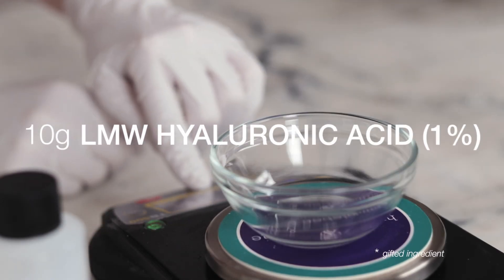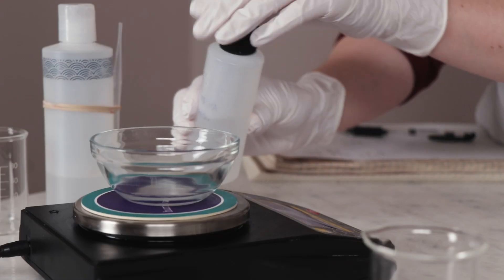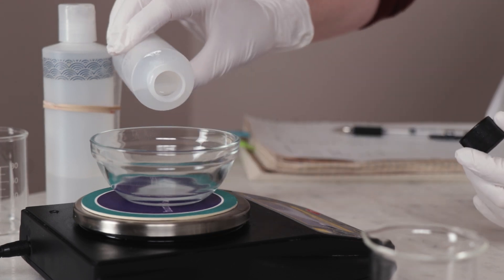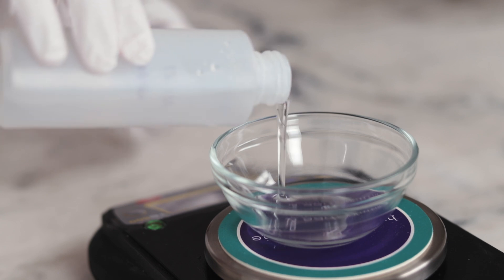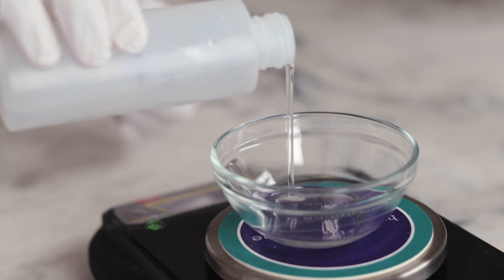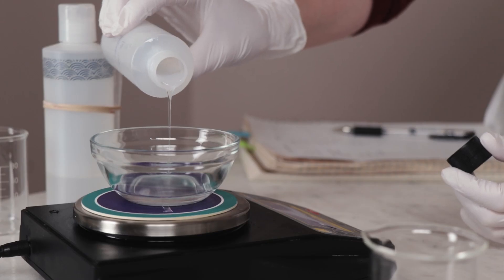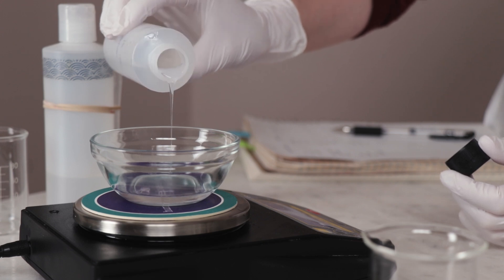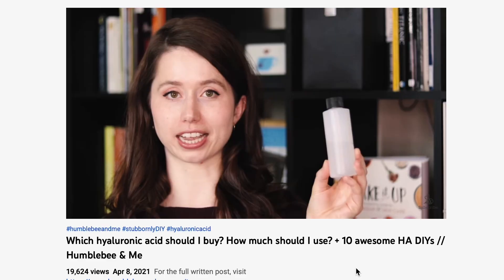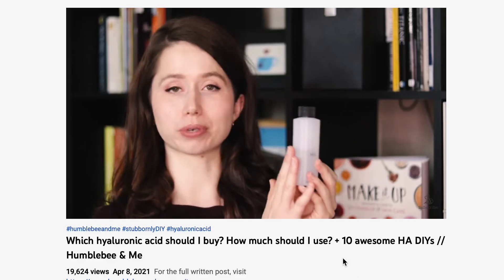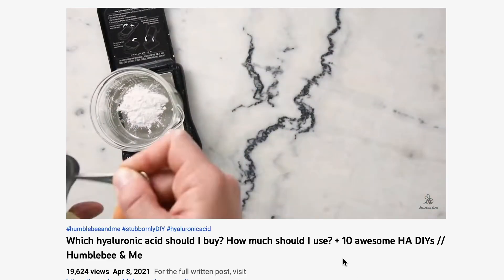20 grams of a 1% low molecular weight hyaluronic acid solution adds some really silky, luxurious, non-tacky, moisturizing goodness to the formulation. I've got an entire blog post and video on how to make this 1% solution from hyaluronic acid powder, and both are linked in the partner blog post. I've also done a Q&A post and video on hyaluronic acid that discusses substitutions and how much hyaluronic acid you should be using in your skincare products, so that's also linked in that partner blog post.